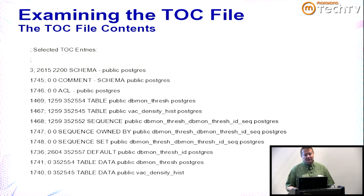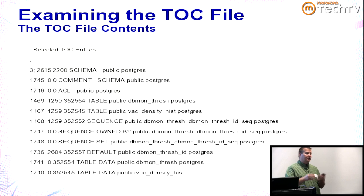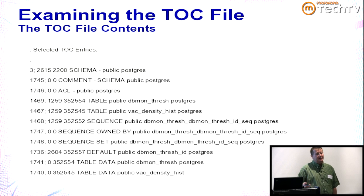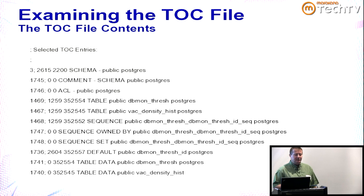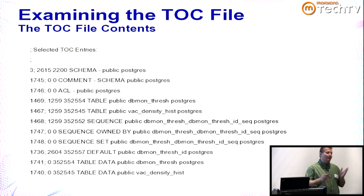You can go into the table-of-contents file and comment out anything you don't want to restore, creating a very custom restore. You could restore a specific set of tables, restore data on only some of them, restore indexes on all but foreign keys on only some, and so on. Then run pg_restore using that table-of-contents file for a highly customized restore. Previously, before parallel restore, the TOC could be split into multiple files to create manual parallelism — no longer needed but a useful technique.